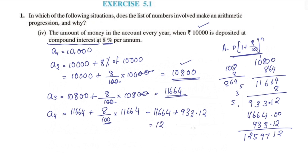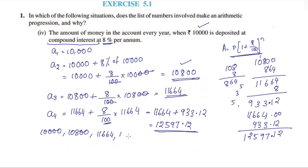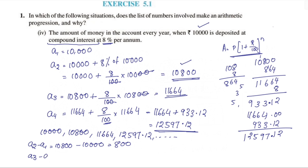The interest on 11,664 at 8% is approximately 933.12, so A4 = 12,597.12. The list of numbers is 10,000; 10,800; 11,664; 12,597.12.